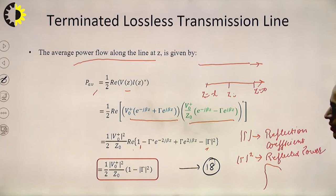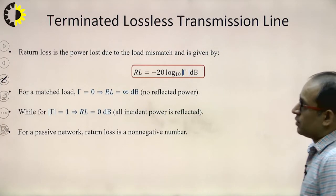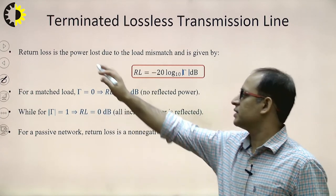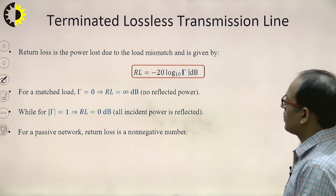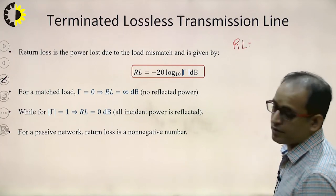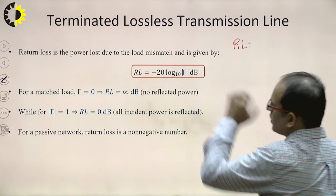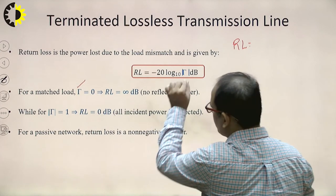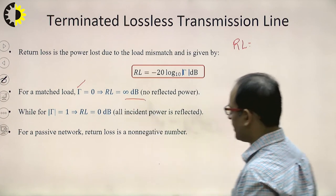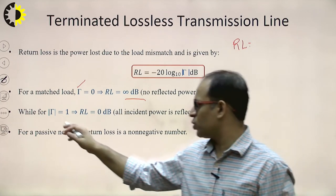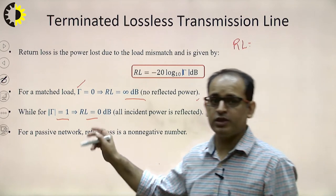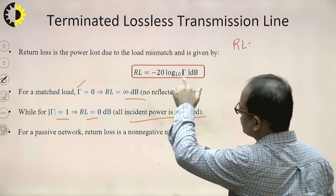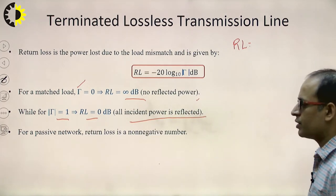Return loss is the power loss due to mismatching at the load side. Return loss RL = −20 log10(|Γ|). For matched condition Γ = 0, return loss is infinite dB, meaning there is no reflected power. For Γ = 1, return loss = 0 dB, meaning all incident power is reflected back.